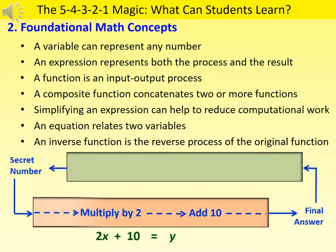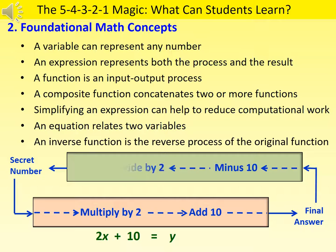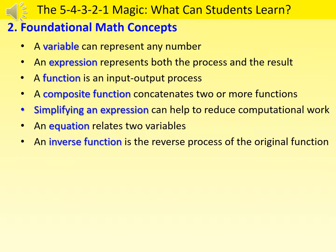This magic activity allows students to see inverse function as a process that undoes the original function. If we double the secret number and add 10 to obtain the final answer, then to find the secret number we undo the process by subtracting 10 from the final answer and then dividing by 2. The inverse function is therefore minus 10 divided by 2. In summary, this magic activity can highlight key concepts like variables, expressions, simplifying expressions, equations, functions, composite functions, and inverse functions.